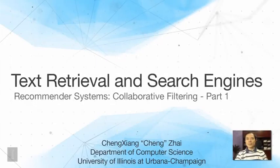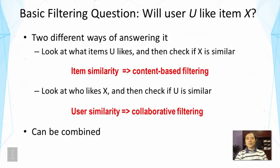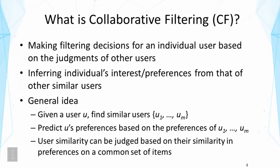This lecture is about collaborative filtering. We're going to continue the discussion of recommender systems. You have seen this slide before, where we talked about the two strategies to answer the basic question: will user u like item x? In the previous lecture we looked at item similarity — that's content-based filtering. In this lecture we're going to look at user similarity, a different strategy called collaborative filtering.